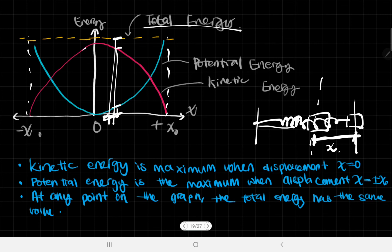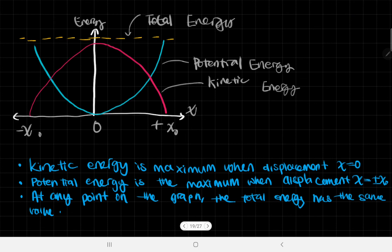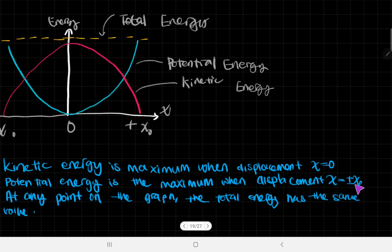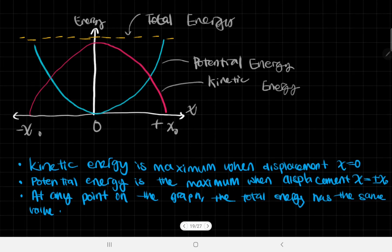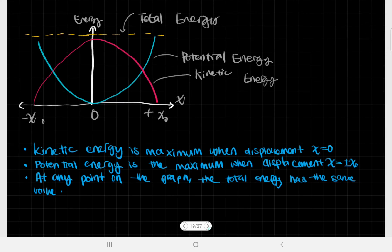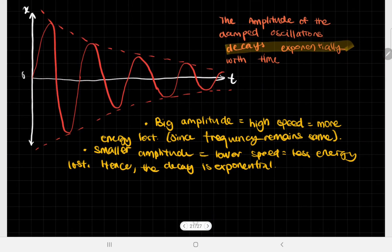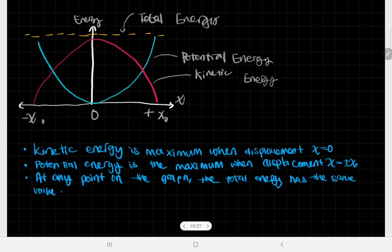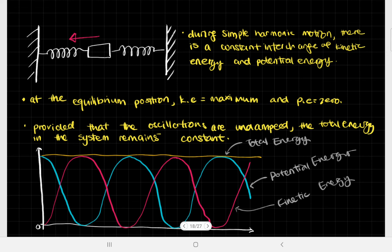At any point on the graph, the total energy has the same value. That's about it for the energy of oscillations in simple harmonic motion. In the next video, I'll talk about damping, and in the following video I'll link these two together to talk about resonance. Thank you so much for watching.